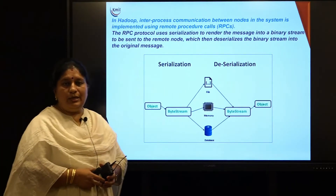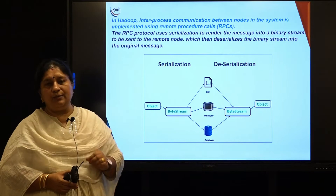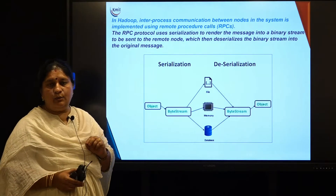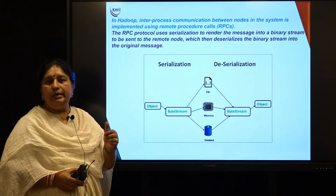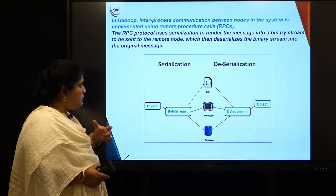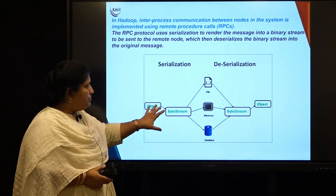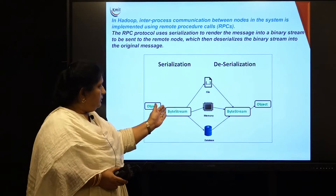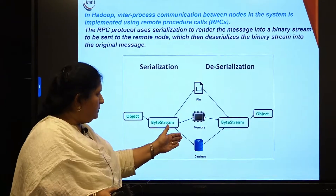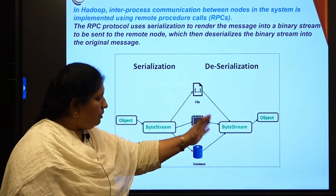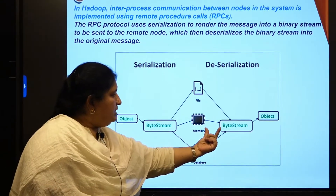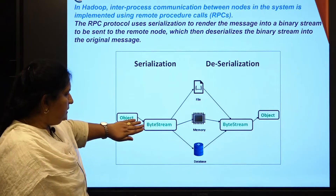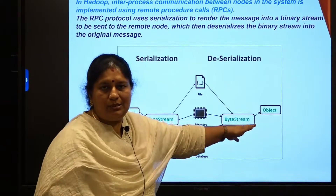During interprocess communication, two processes communicate via message passing. In Hadoop, two nodes communicate via interprocess communication through remote procedure calls. At the source node, the object is converted into a byte stream — that is serialization. The byte stream is transmitted, and at the receiving node, the byte stream is converted back into an object — that is deserialization.